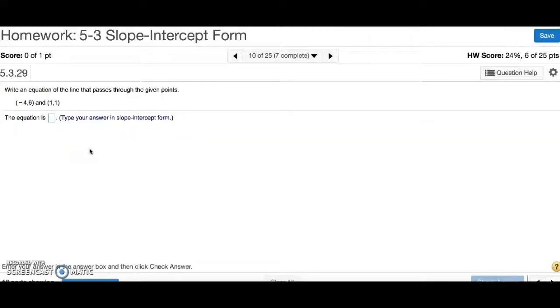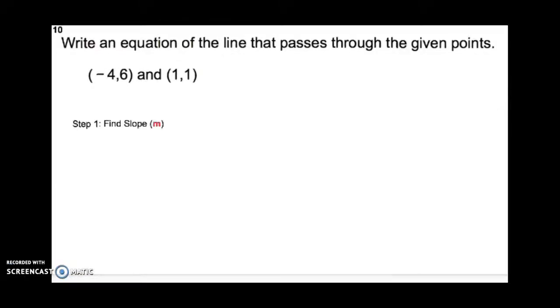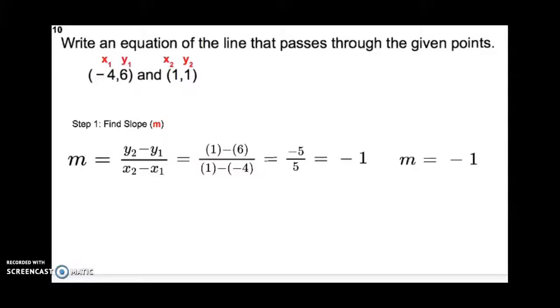Going to number 10, write an equation of the line that passes through the given points. So, let's take a look at it. So, the first step is to find the slope. So, write down the slope formula, and label your x1 and y1, x2 and y2. Then, substitute in your points. So, we have 1 minus 6 over 1 minus a negative 4. That gives you negative 5 over 5, which equals negative 1. So, my slope is going to be negative 1.